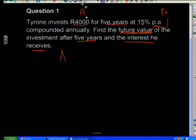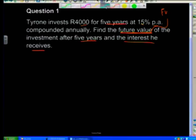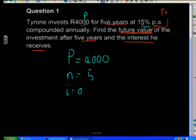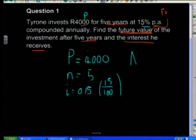We know that he invests 4,000 Rand, so P is 4,000 — that's our principal, our original amount. Invested for five years, so n equals 5. And an interest rate of 15%, so i is 0.15 — I got that by taking 15 and dividing by 100. It's compounded annually and they want the amount of the investment after year five.